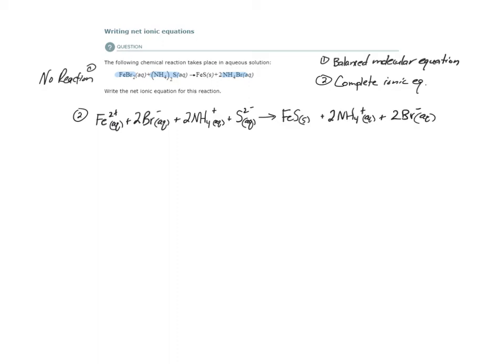Notice that not only did I write the correct charges for each ion, I also kept the stoichiometry. This coefficient of two means we have two of these ions — I show that here with two ammoniums, and two ammoniums and two bromides on the products side. We have to keep the stoichiometry.